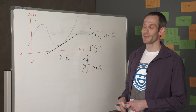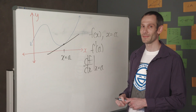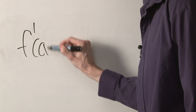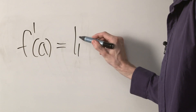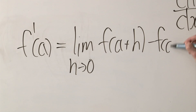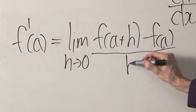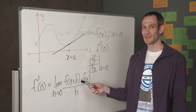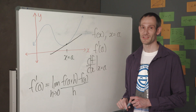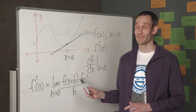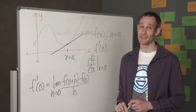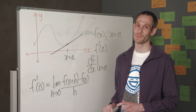By definition, the derivative of a function at a point x equals a is found by evaluating the following limit. That is, the derivative of the function at the point a is equal to the limit as h goes to 0 of f of a plus h, take f of a, divide it by h. If when I evaluate this limit the limit exists — that is, it gives me a finite number — then I say that my function is differentiable at that point a. If I evaluate this limit and I either get positive infinity or minus infinity, then I say that my function f is non-differentiable at that point a.